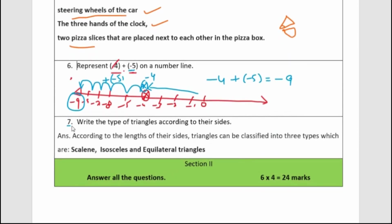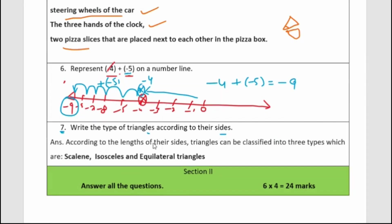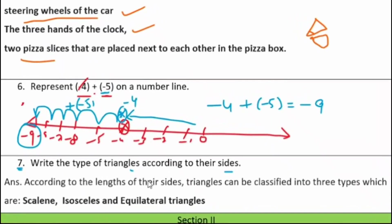The last question in this section — question seven — is: write the type of triangle according to their sides. According to the sides of a triangle, it is divided into three types: scalene triangle, isosceles triangle, and equilateral triangle.